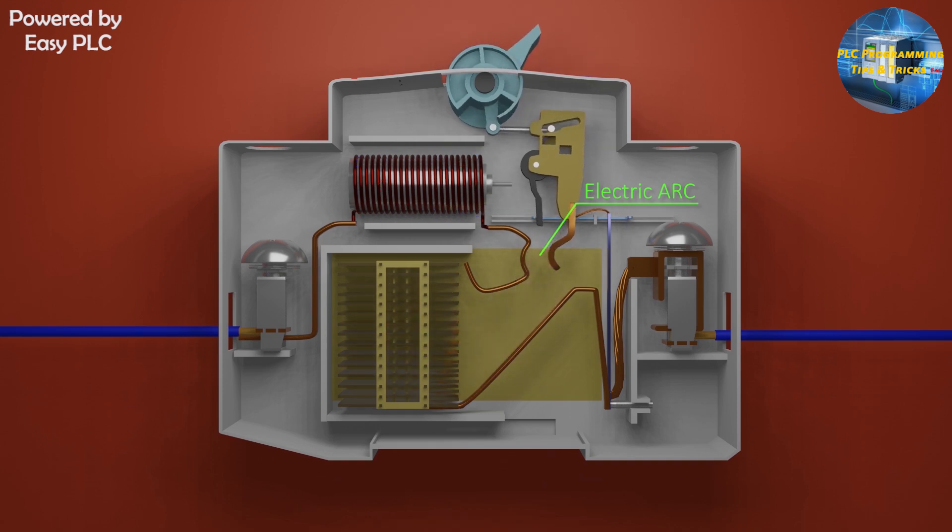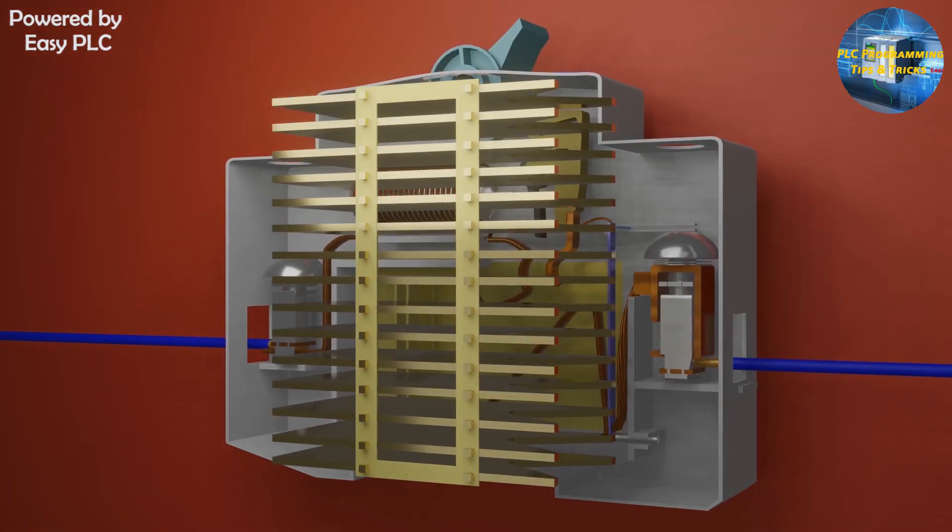There is an arc chamber in the MCB. The job of the arc chamber is to catch the electric arc and dissipate the heat of the electric arc. The electric arc chamber works like a heat sink. The arc chamber is made up of number of metal plates stacked together to absorb the heat of the electric arc.